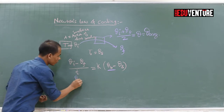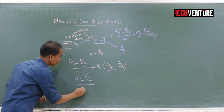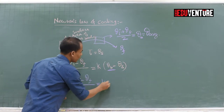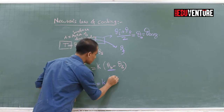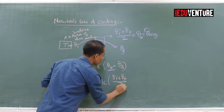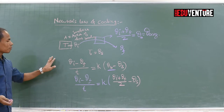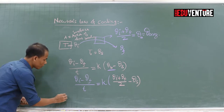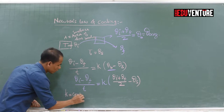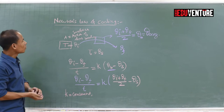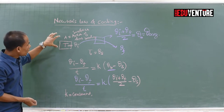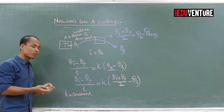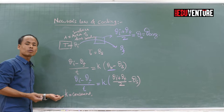The equation becomes: (theta-i minus theta-final) divided by T equals K times [(theta-i plus theta-final)/2 minus theta-s]. We use this to calculate whatever quantity is not given. Note that K is a constant that depends on the material of the body, its specific heat, and its mass.